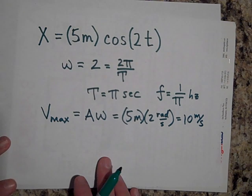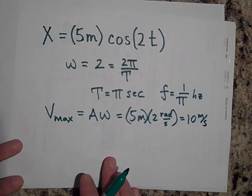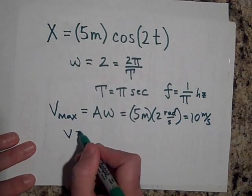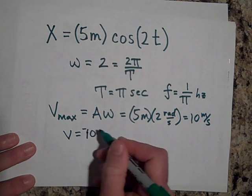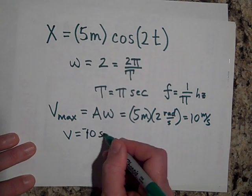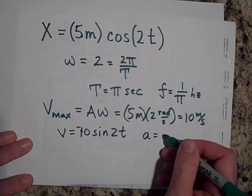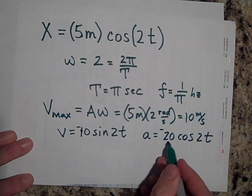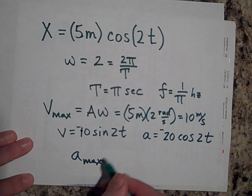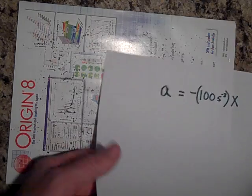Can you tell me what the maximum acceleration is going to be for this motion? Since v is the derivative of x, the velocity is −10·sin(2t), and then a will be −20·cos(2t) when you bring the 2 out again. So the maximum acceleration, a_max, will be 20 meters per second squared.